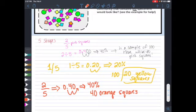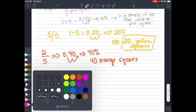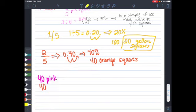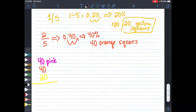Now we can kind of do one last check with our math. So earlier I said that we would have 40 pink squares. We just said we would have 40 orange squares. And lastly, we said we would have 20 yellow squares. And if we add 40 plus 40 plus 20, that's going to give us a total of 100.